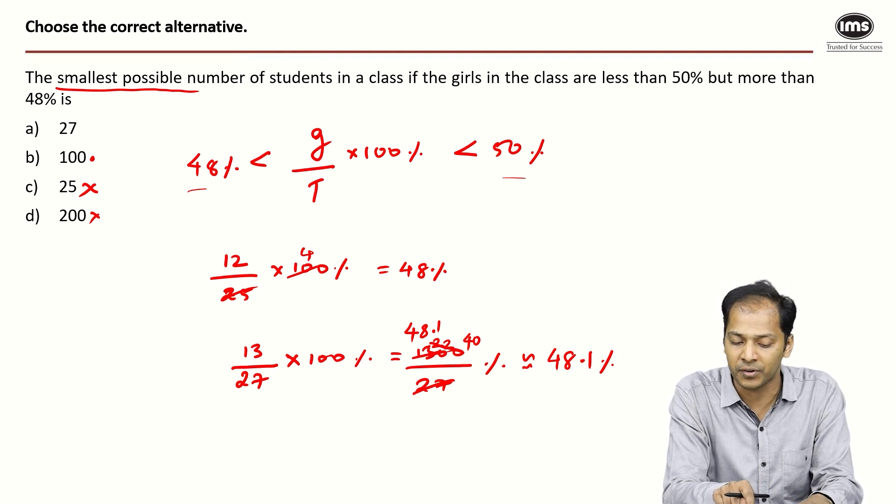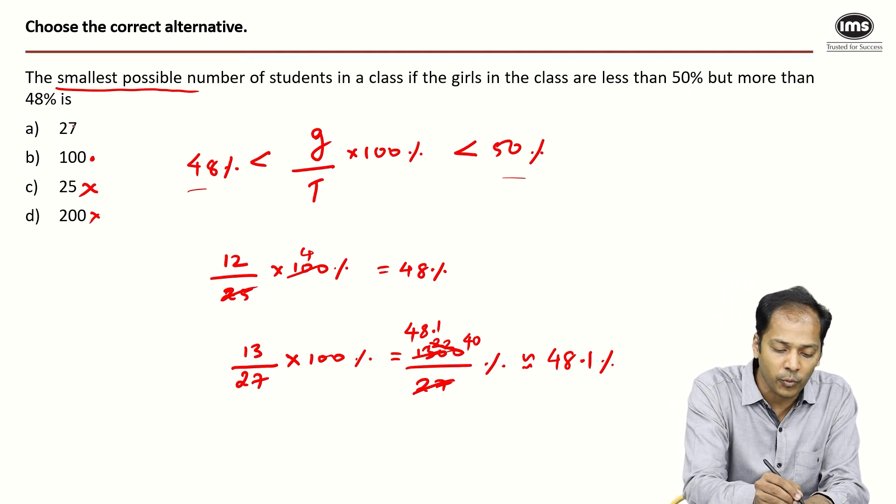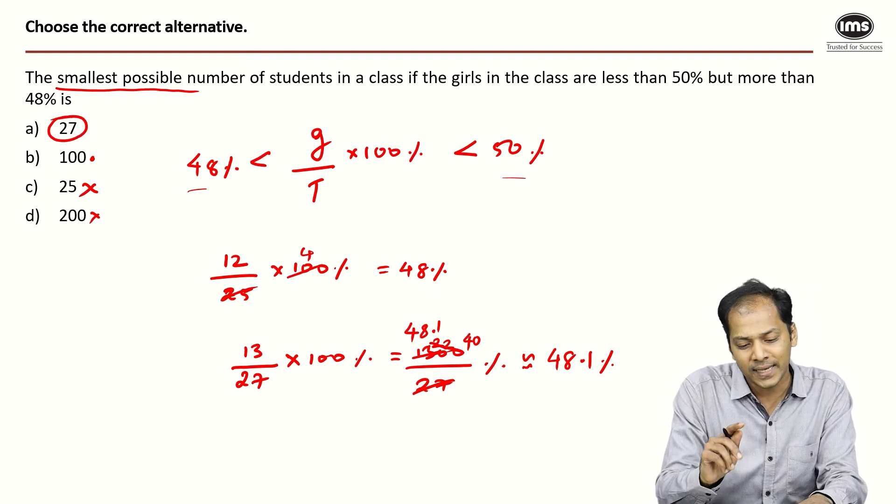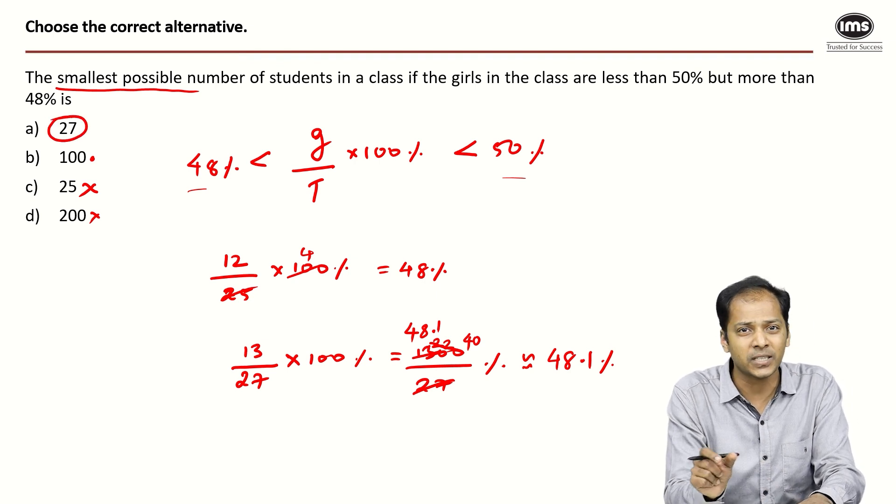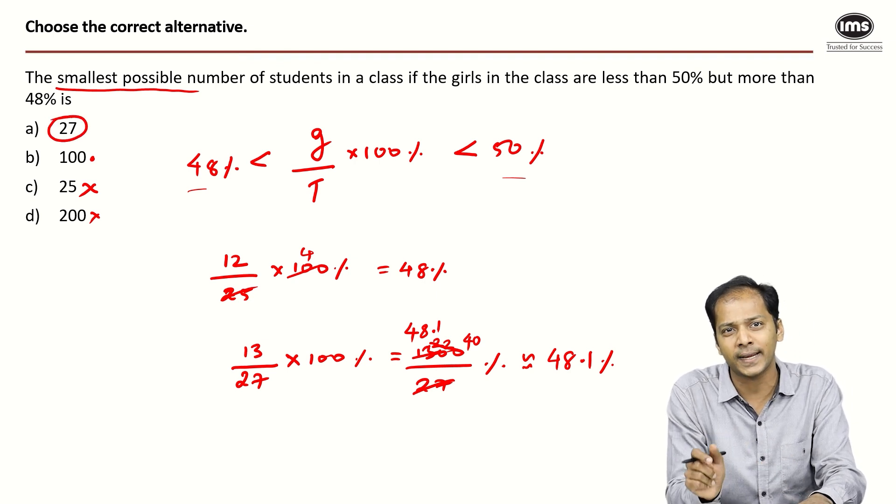It is greater than 48% and less than 50%. So the total of 27 students is able to give me a percentage of girls which is between 48% and 50%. Therefore my answer to the question is option A.